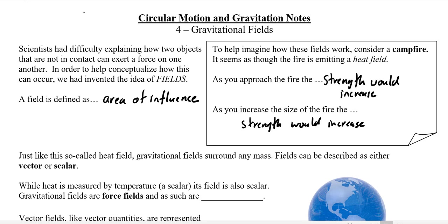Just like this so-called heat field, gravitational fields surrounding any object with mass are going to depend on, one, how close you are to it, and two, how massive the object is. We're going to come back to this idea of fields again and again when we look at electromagnetism later.